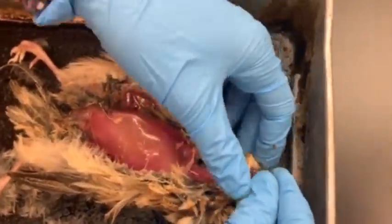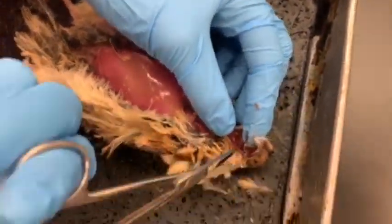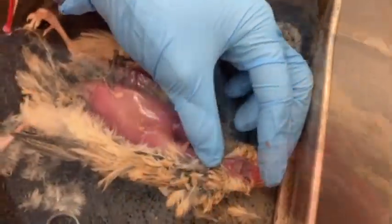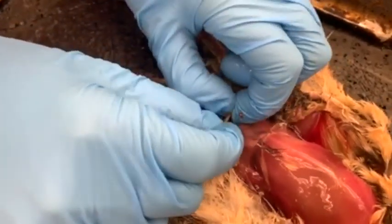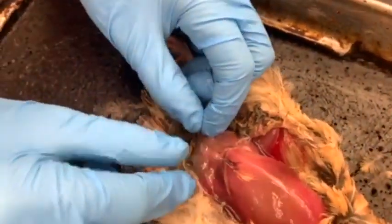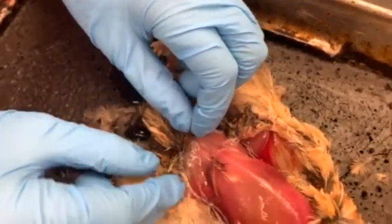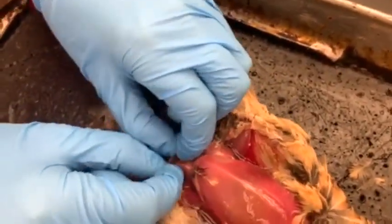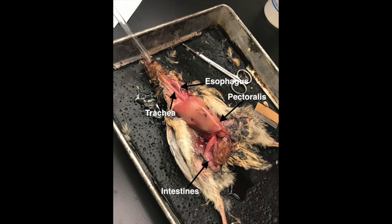Next, we cut down the margins of the beak on both sides of the junction of the maxilla and mandible to get better access to the glottis. We then tear through the peritoneum holding in the abdominal intestines. Notice the pectoralis, which is the large downstroke muscle important for bird flight and the largest muscle in the bird's body. The supracoracoideus is located underneath the pectoralis and is responsible for the upstroke in bird flight.